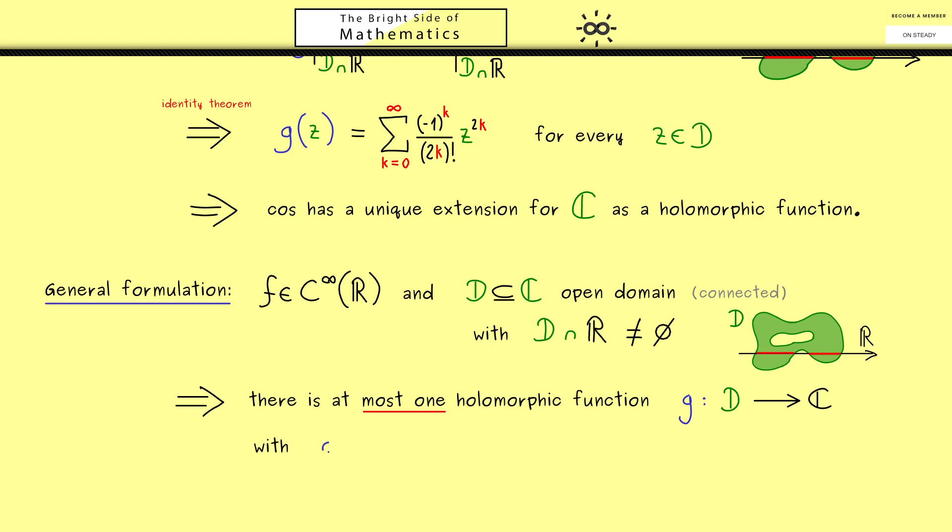With the property that g restricted to the intersection is the same as f restricted to the intersection. In other words, if you find a holomorphic extension of the function f for the domain D, you know it's the only one, it's unique.